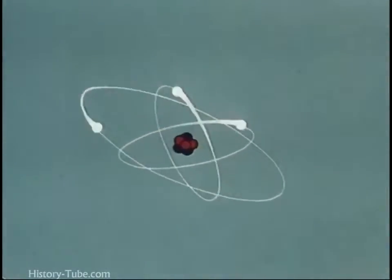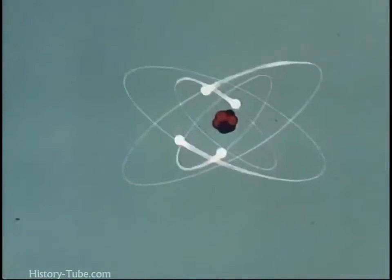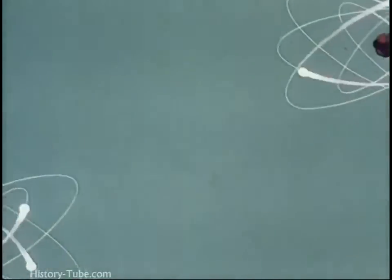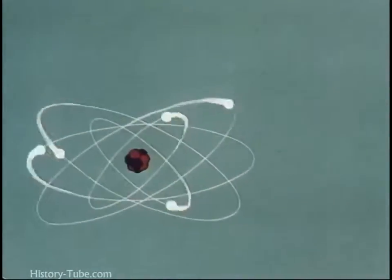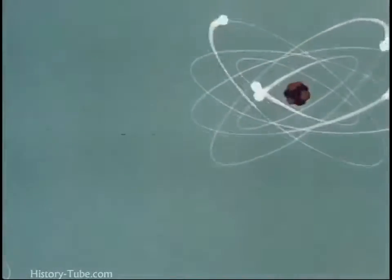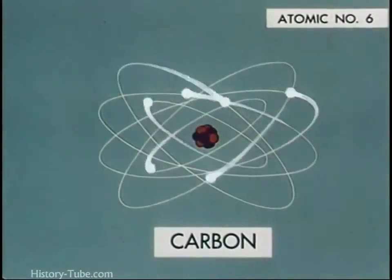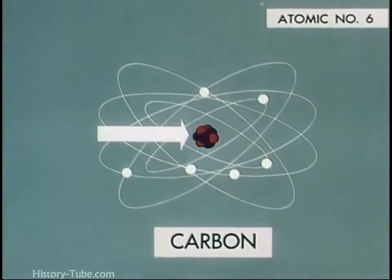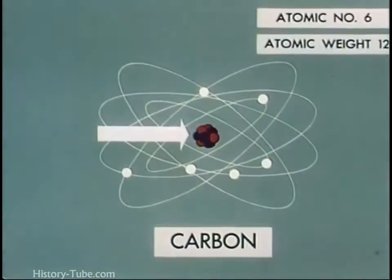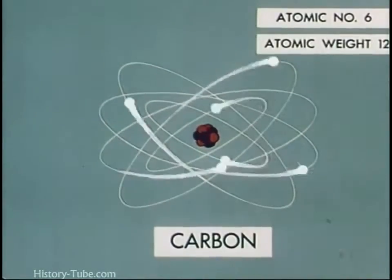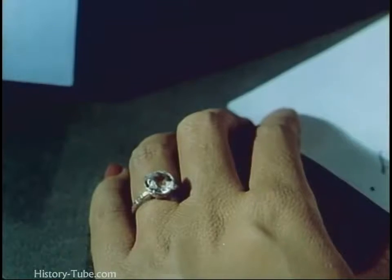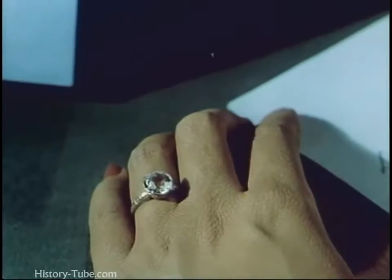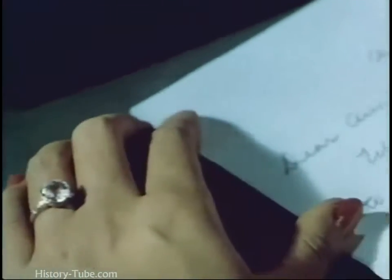Going up the ladder, we find elements with atoms that become progressively more complicated, with more electrons and increased numbers of protons and neutrons in their nuclei. For example, a neutral carbon atom with an atomic number of six has six electrons. In the nucleus are six protons plus six neutrons, so the atomic weight is 12. Carbon exists in many forms, high and humble, as diamonds and pencil points.